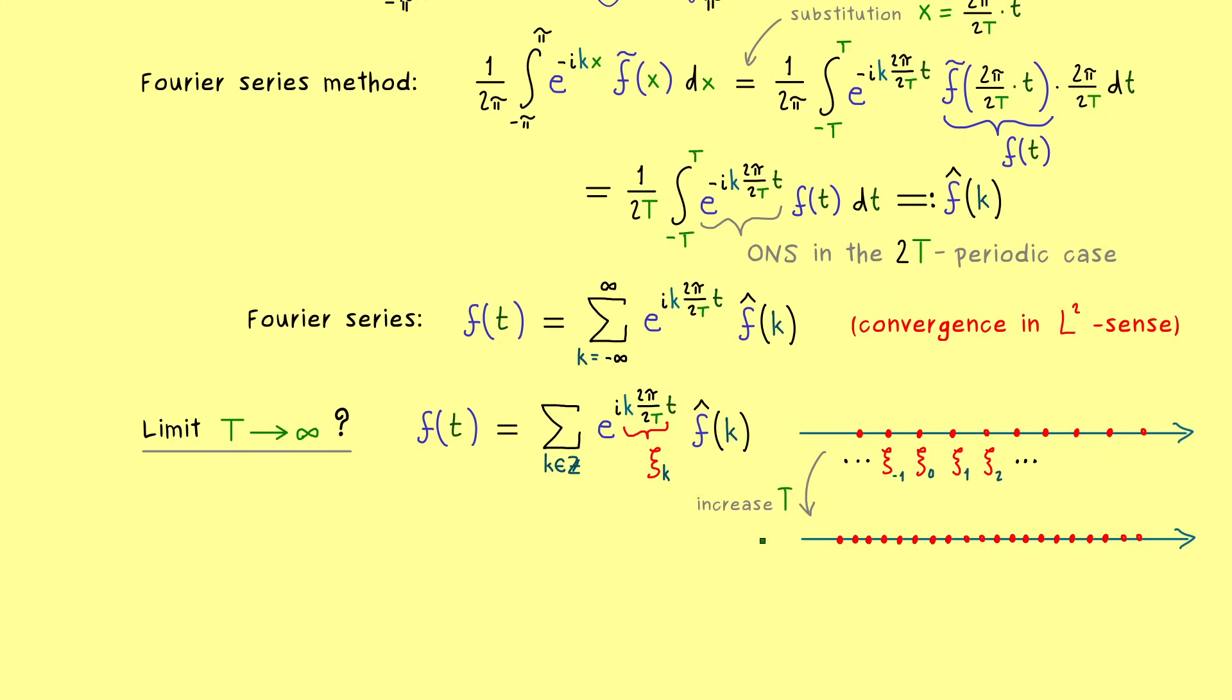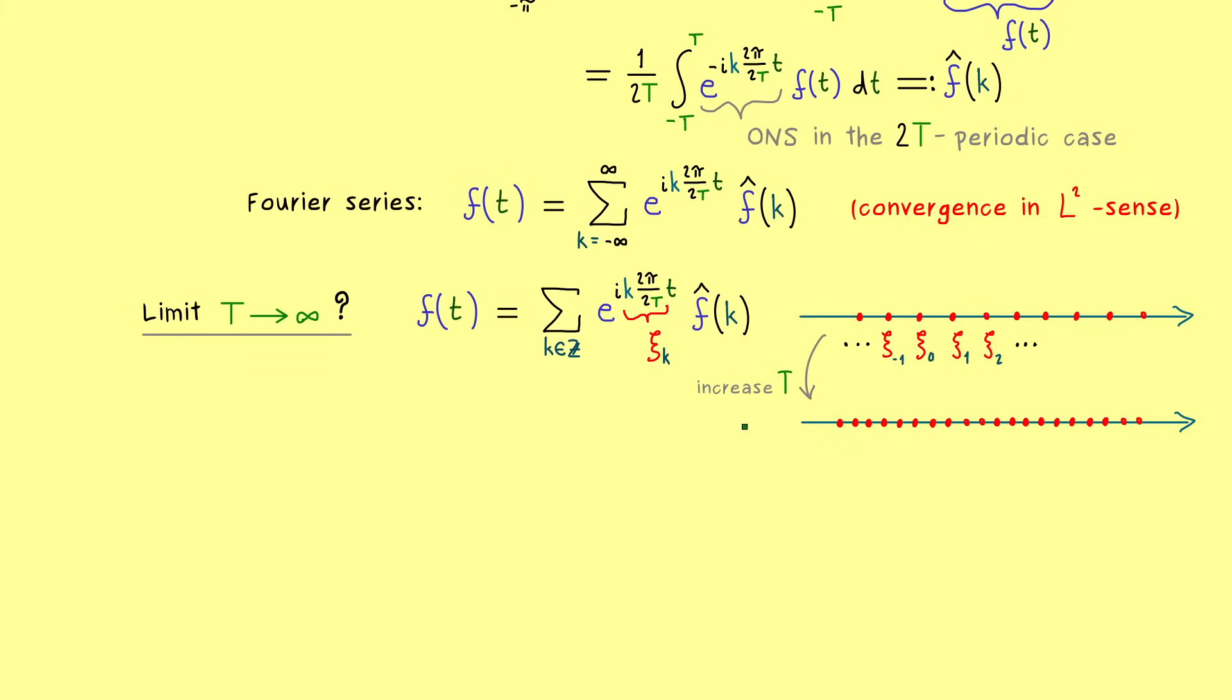Again, it's not completely precise, but it already makes sense for us. And indeed this will be our motivation for the next calculations. So first we use our ξ_k here in the exponent and also the integral representation of the Fourier coefficient. Which means also there inside the integral we have our ξ_k for the frequency. And now actually our goal is to read this sum as a Riemann sum, so as an approximation for an integral.